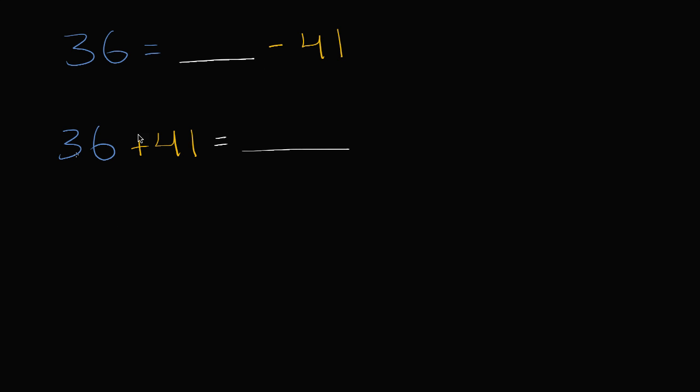You could draw this on a number line. If these two statements being the same doesn't make full sense, if we do a number line right over here, and then they're saying, okay, we're going to start at some mystery number. We're starting at some mystery number. That's our blank. We're going to subtract 41. We're subtracting 41. So we're subtracting 41 and we're getting to 36. And we're getting to 36.